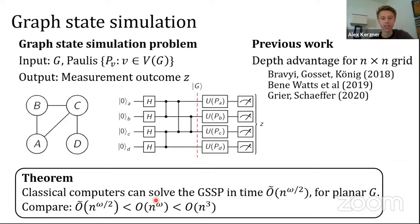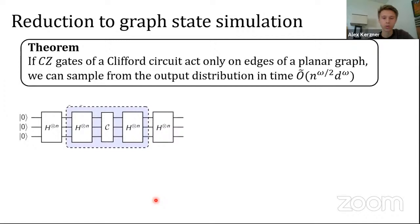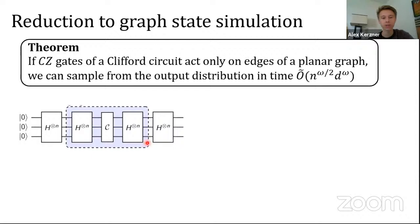Now I'll explain how the reduction from Clifford circuit simulation to graph state simulation works. We start by padding the circuit with Hadamards on either side — the circuit produces the same outputs. The first layer of Hadamards maps the all-zero state to the all-plus state, which we need to produce a graph state. The last layer of Hadamards handles measurement basis changes: measuring in the X basis means applying a Hadamard then measuring in the standard basis; measuring in the Y basis means applying an S gate, then a Hadamard.